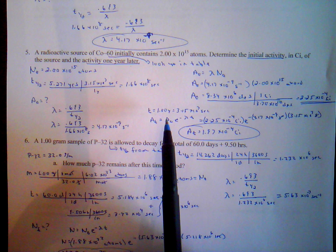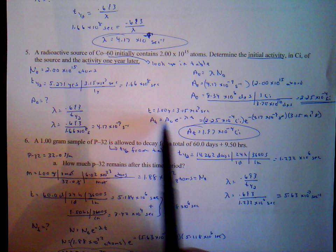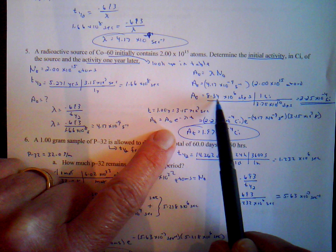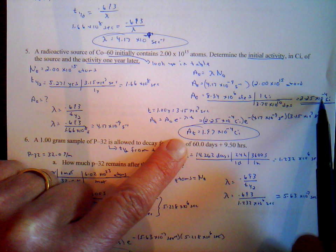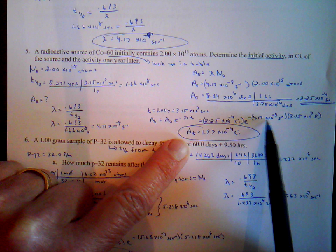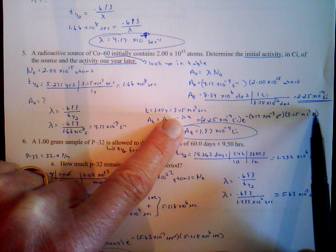For the activity after one year — 3.15 times 10 to the 7 seconds — we use the activity equation with initial activity 2.25 times 10 to the minus 4 curies, decay constant 4.17 times 10 to the minus 9 per second, and time 3.15 times 10 to the 7 seconds. The seconds cancel, and we get an activity of 1.97 times 10 to the minus 4 curies.